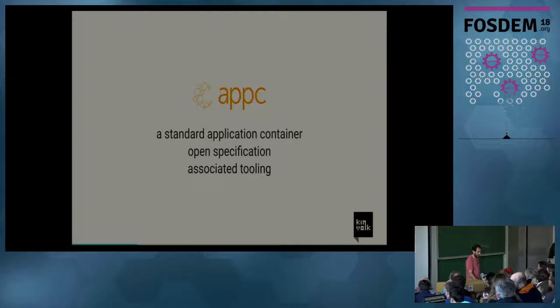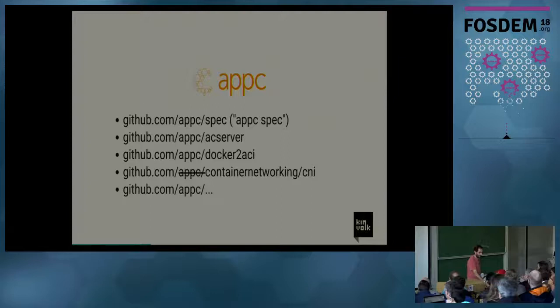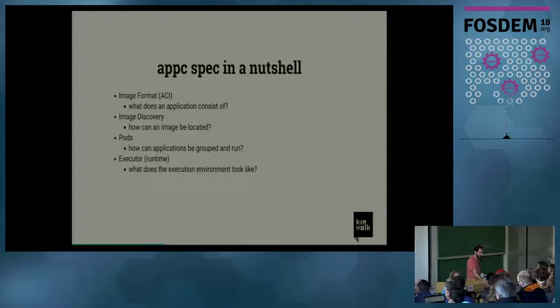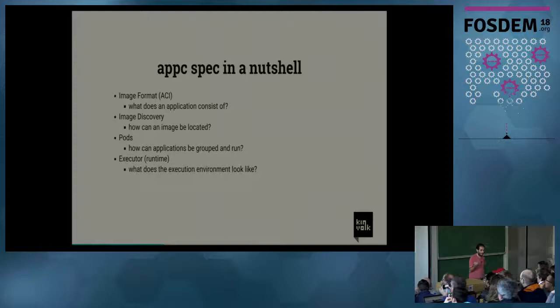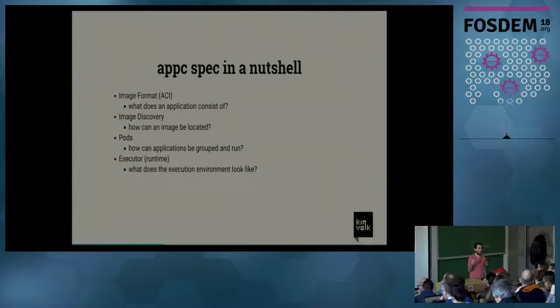The AppC is an open specification that defines concepts like image distribution. It defines four things. First, the image format — the ACI image format — which defines what the application consists of. Basically, a container is just a tar archive with some associated metadata, usually a manifest, that defines how this tar archive should be executed: which namespaces, what security features should be enabled, and so on.